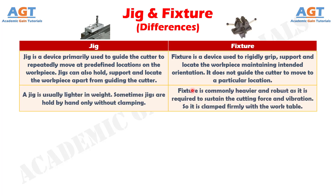Number 2: A jig is usually lighter in weight. Sometimes jigs are held by hand only without clamping, whereas a fixture is commonly heavier and robust as it is required to sustain the cutting force and vibration, so it is clamped firmly with the work table.